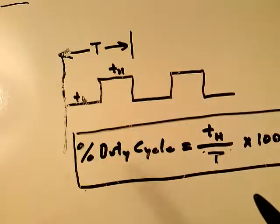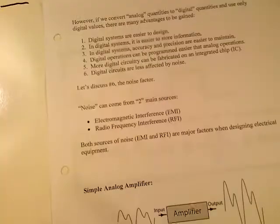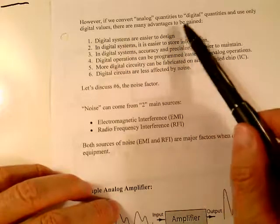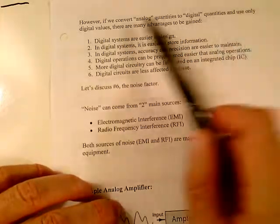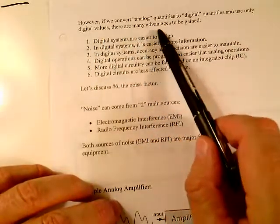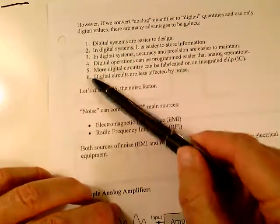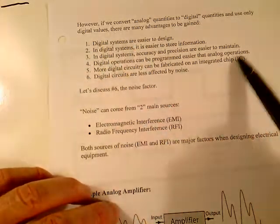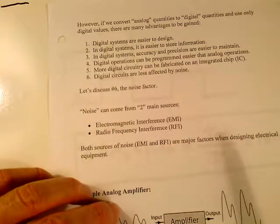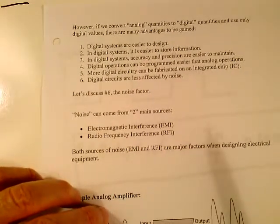However, on page number five, if we convert analog quantities to digital quantities and use only digital values, there are many advantages to be gained. Take your time and look through each one of these, one through six. These are all the advantages that have gone to digital systems over analog systems.